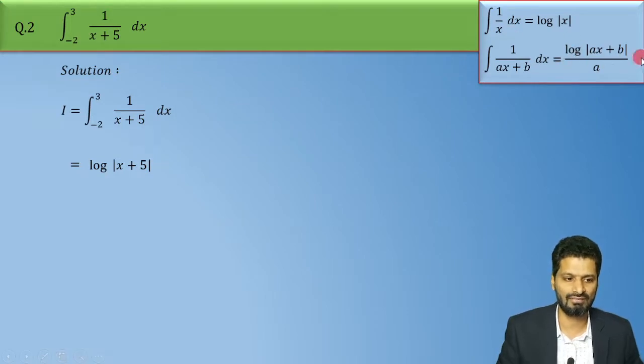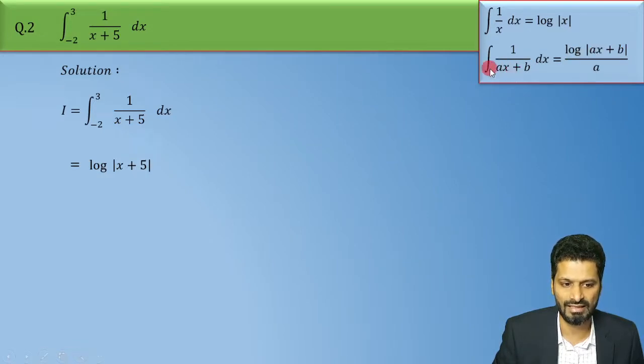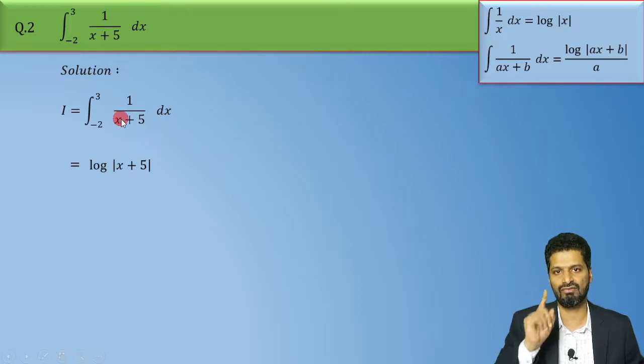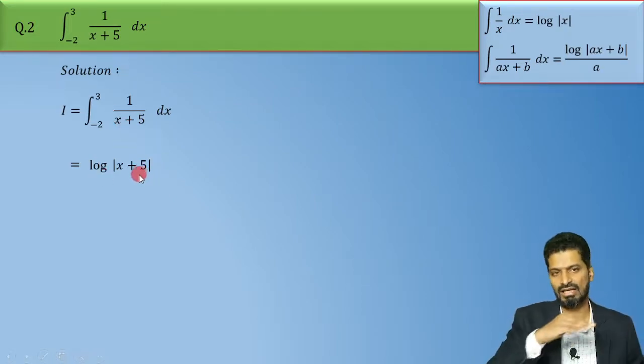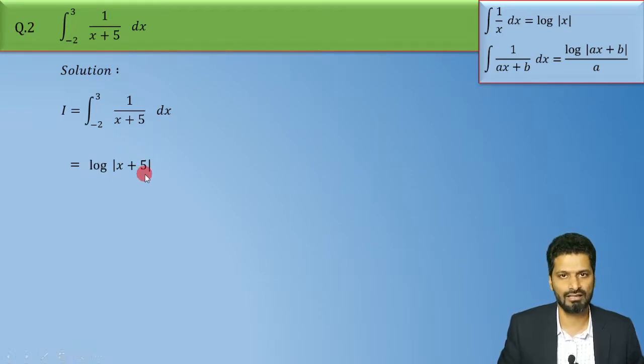Now you might be wondering ka yaha par divided by a bhi hai. To yeh a se divide kiya hua hai, kyunke yaha par x ka coefficient is a, right. X ka coefficient is a. But humare case mein x ka coefficient hai one. To one se divide karne ki koi zarurat nahi hai, eventually agar aap one se divide bhi karoge to yeh hi milne wala hai, alright.